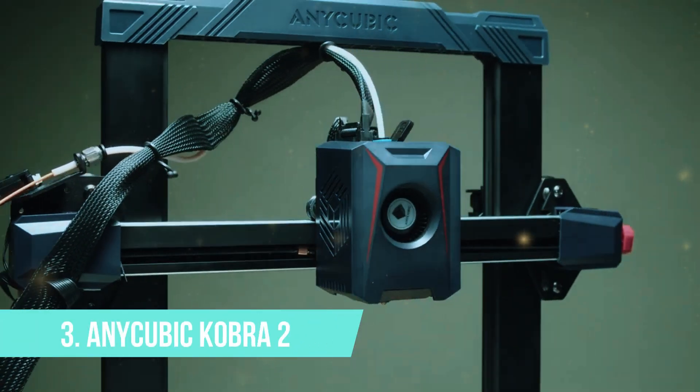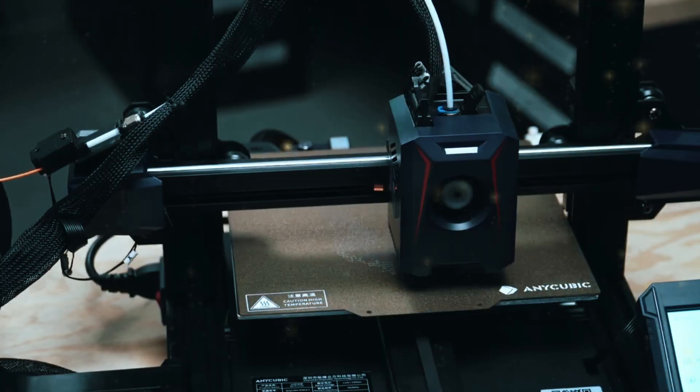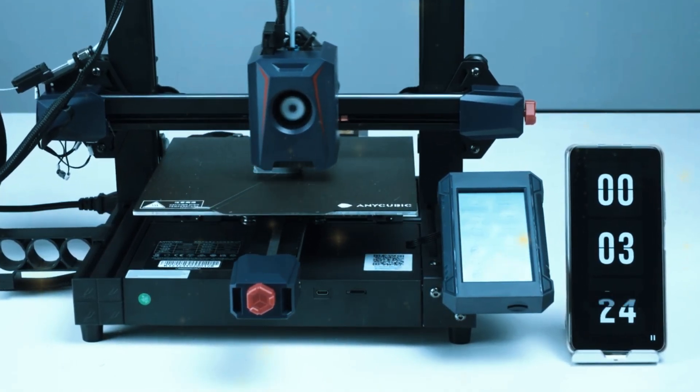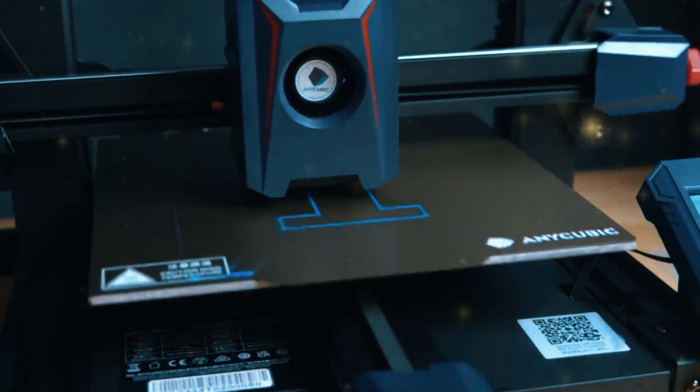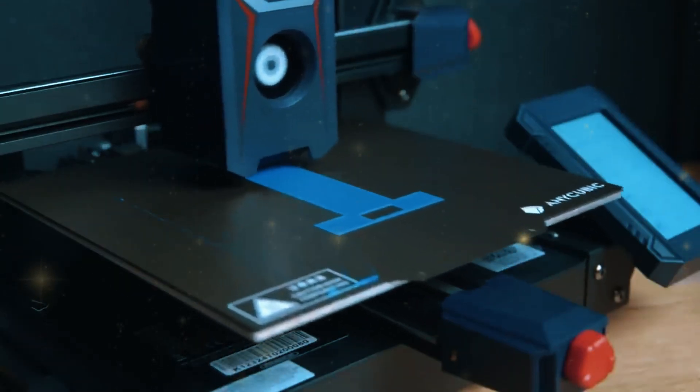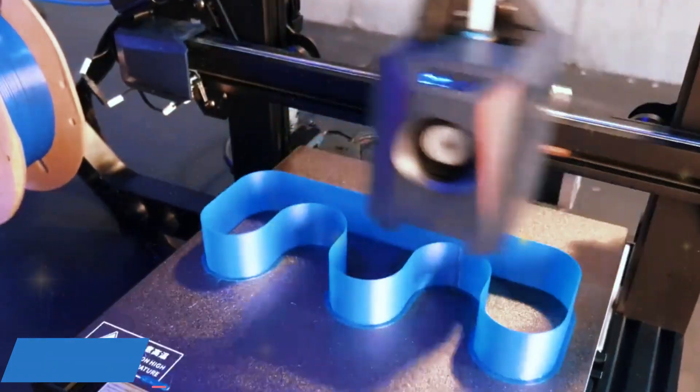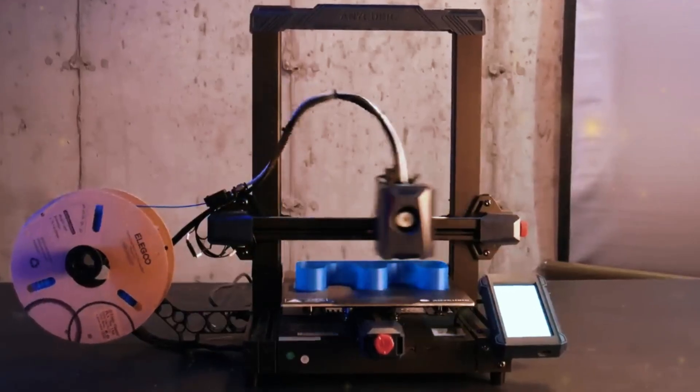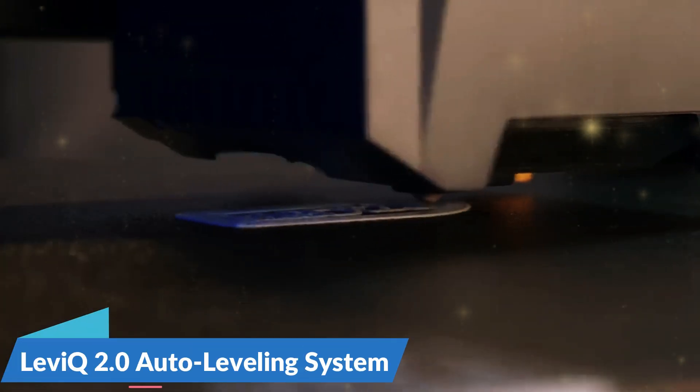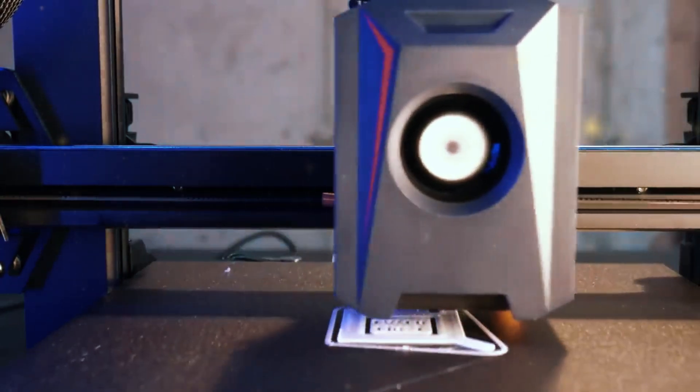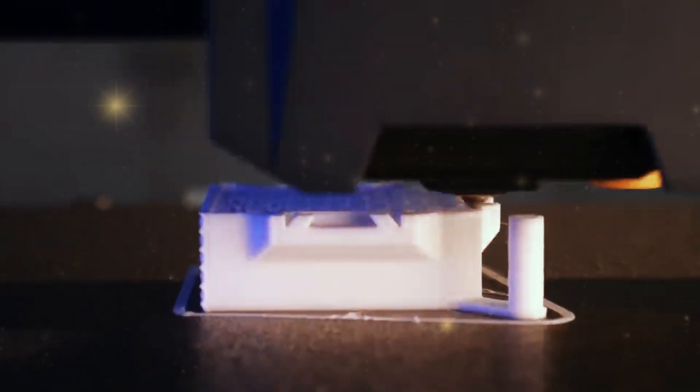Number three, Anycubic Cobra 2. Taking the third spot is the Anycubic Cobra 2, a printer that strikes an excellent balance between affordability and high-performance features. If you're looking for a 3D printer that delivers great results without breaking the bank, this could be the one for you. The Anycubic Cobra 2 comes with an 8.7 by 8.7 by 9.8 inch build volume, which is large enough for a wide variety of projects. One of the standout features of this printer is its Leibik 2.0 Auto Leveling System, which automatically adjusts the print bed for optimal performance, saving you time and ensuring that your first layer is always perfect.